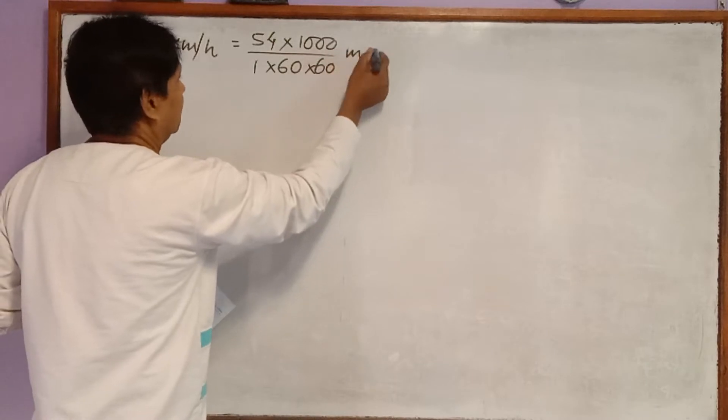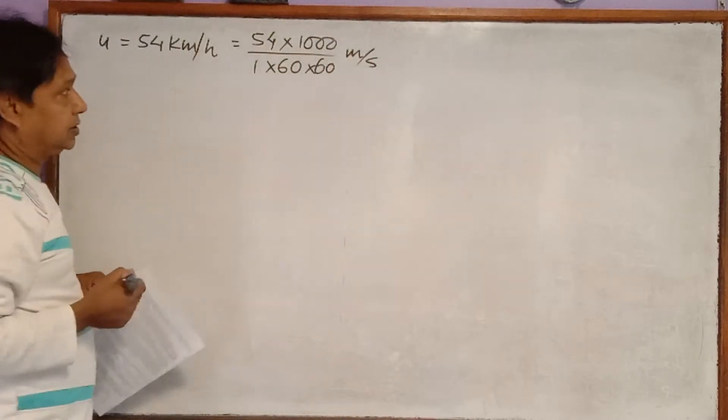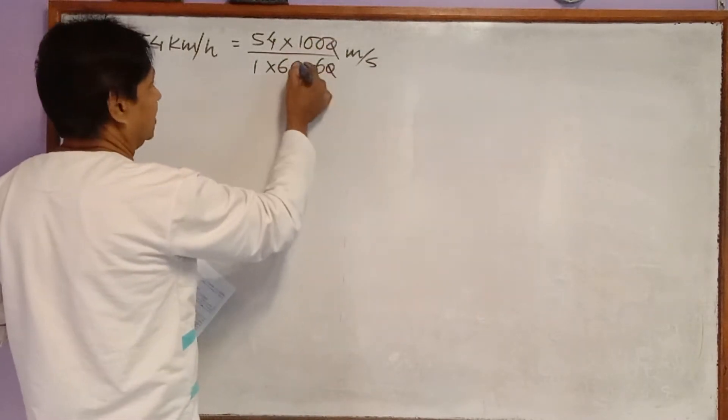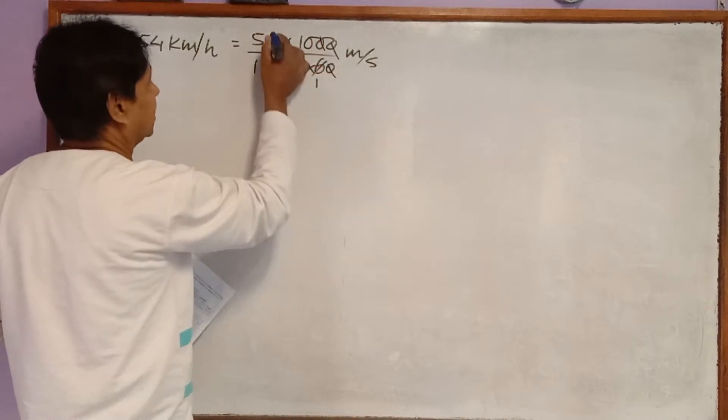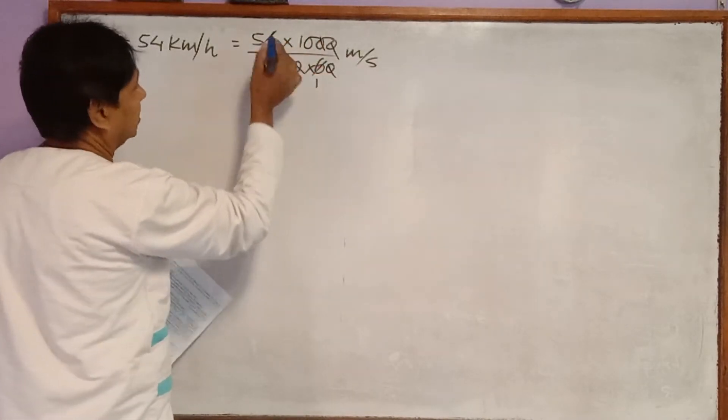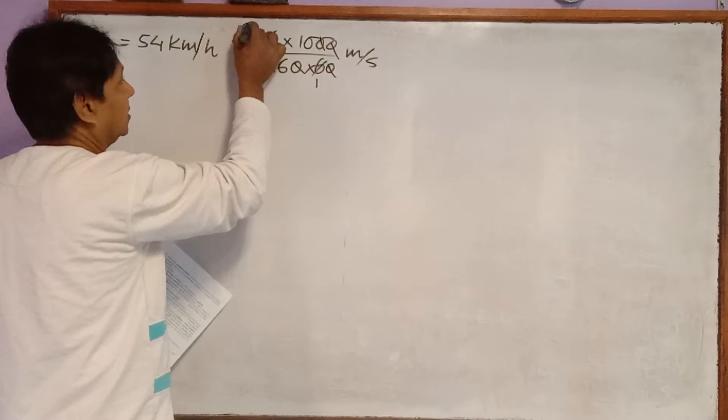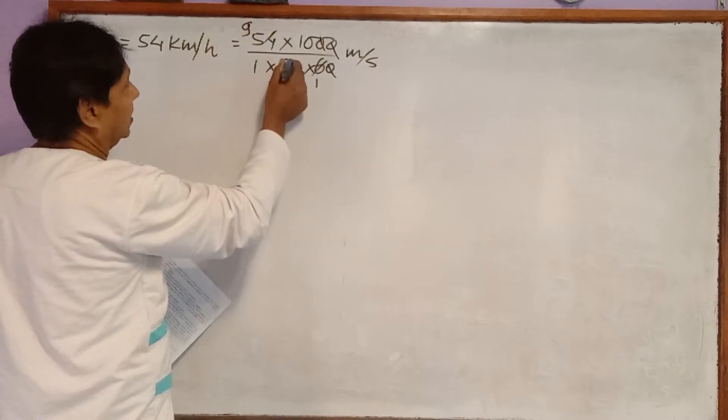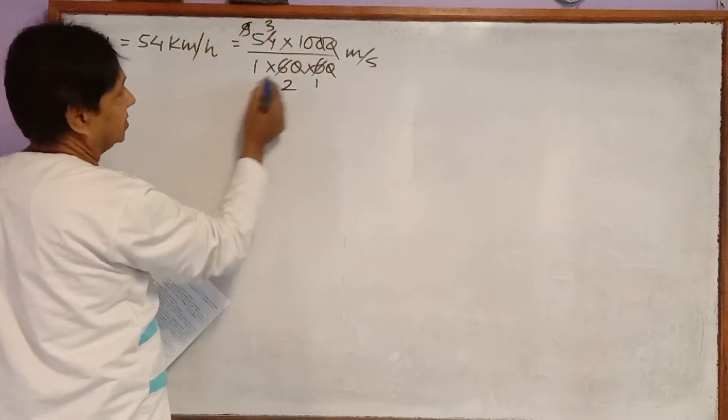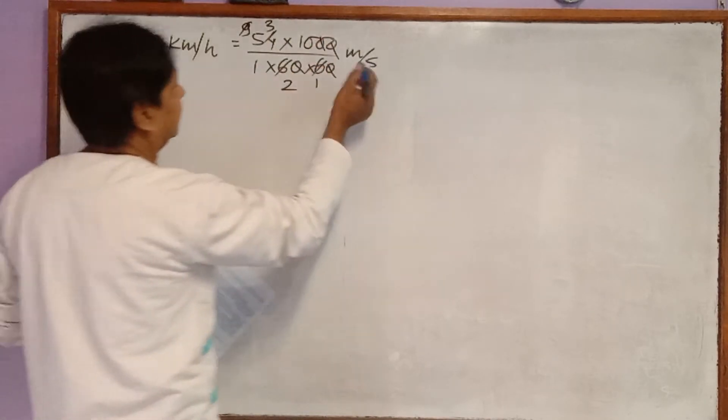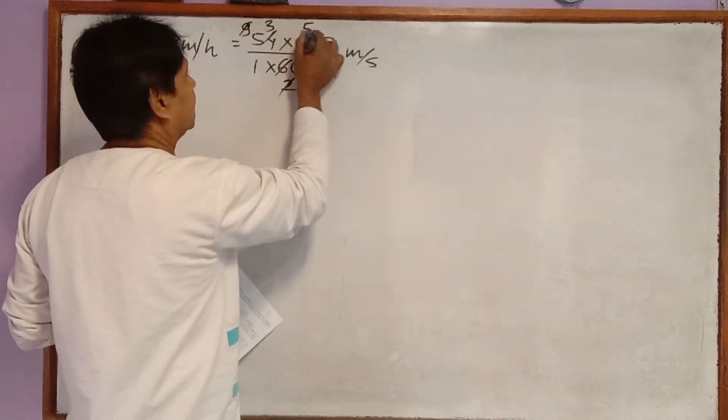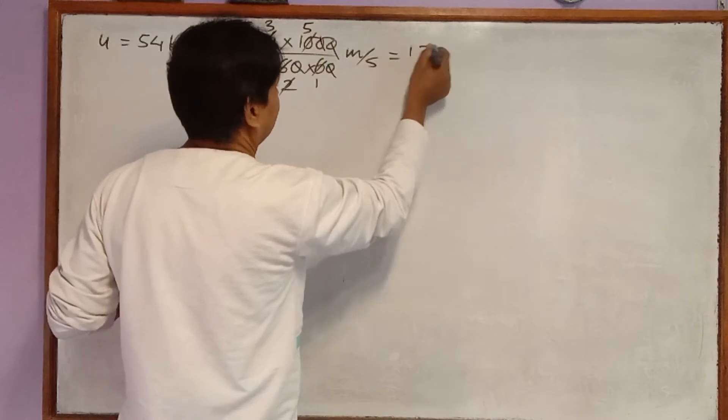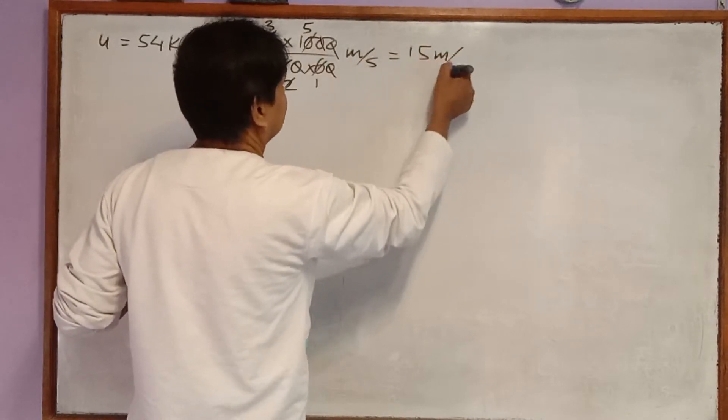Now kilometer converted to meter and time converted to second. 0 0 cancel, 0 0 cancel, 6 1 the 6, 6 nines are 54 and 3 2s are 6, 3 3s are 9. This is equal to 30 by 2, 2 goes, 5 3s are 15. 15 meters per second.